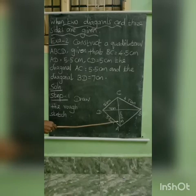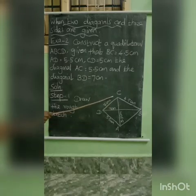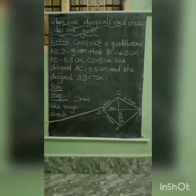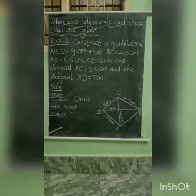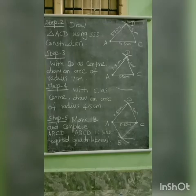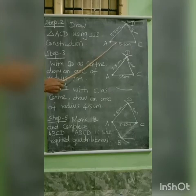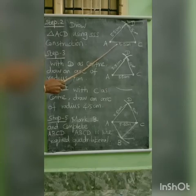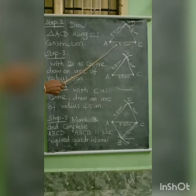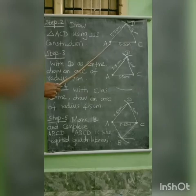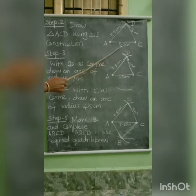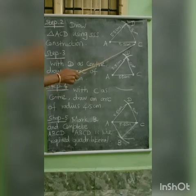One diagonal length is 7 cm, another is 5.5 cm. Then 3 side lengths: AD equal to 5.5 cm, CD equal to 5 cm, then BC is 4.5 cm. Draw the rough sketch with the given measurements. Then in the second step, draw one triangle for the given quadrilateral using SSS construction.